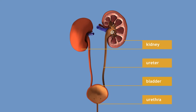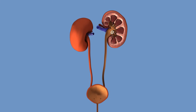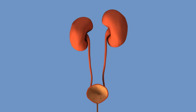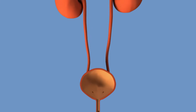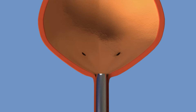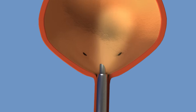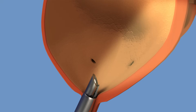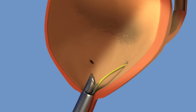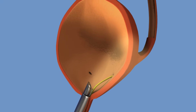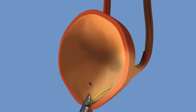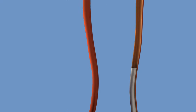This animation shows the removal of a kidney stone. Ureteroscopy is typically performed with the patient under general anaesthesia. A small tube is passed through the urethra into the bladder, and from there up into the ureter and into the kidney. A contrast study may be performed to assess the anatomy of the renal collecting system before stone removal.